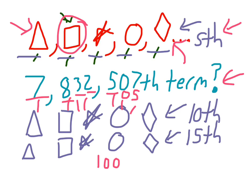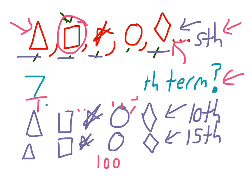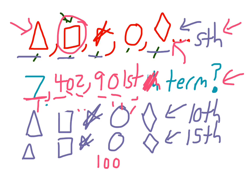And quickly, just to show you a different number here, we could have done something like 7,402,901st term. And if we were dealing with that, it would be just as easy. We'd say, okay, well, 7,402,900 is divisible by five. That's going to be the diamond. The first one is going to be the triangle.